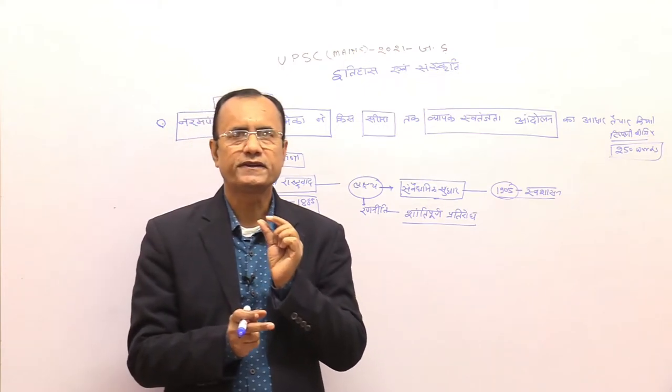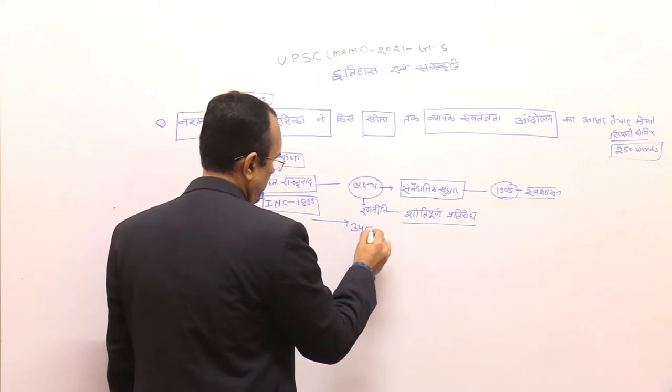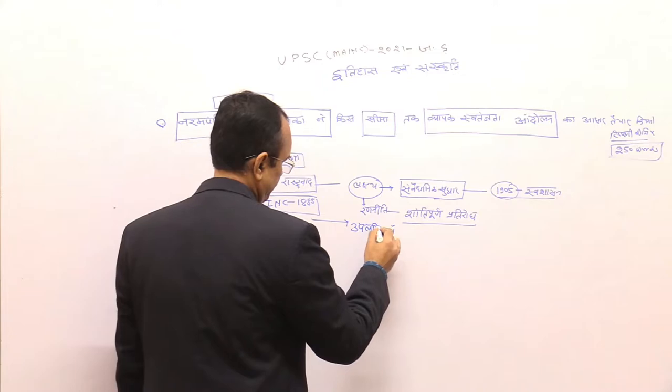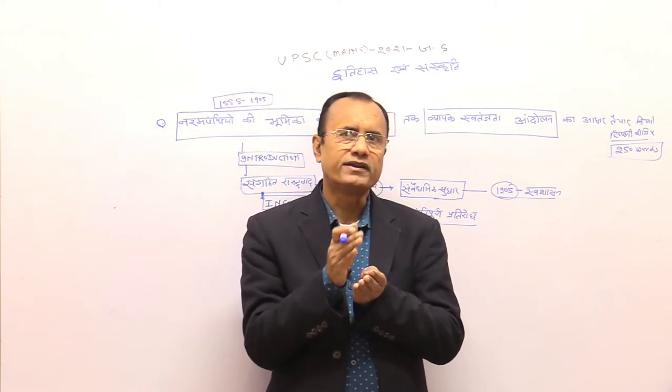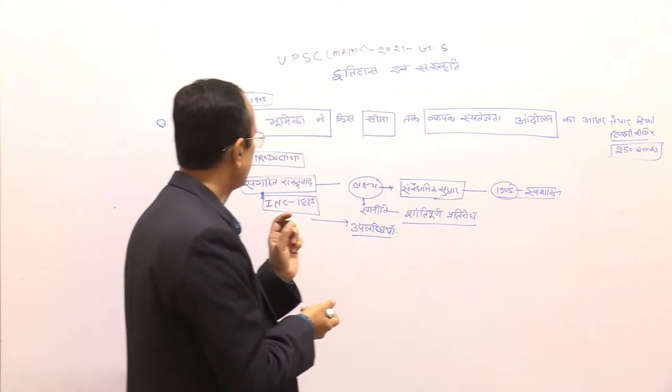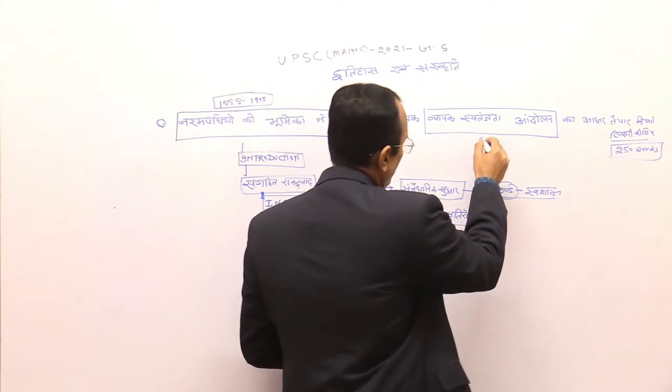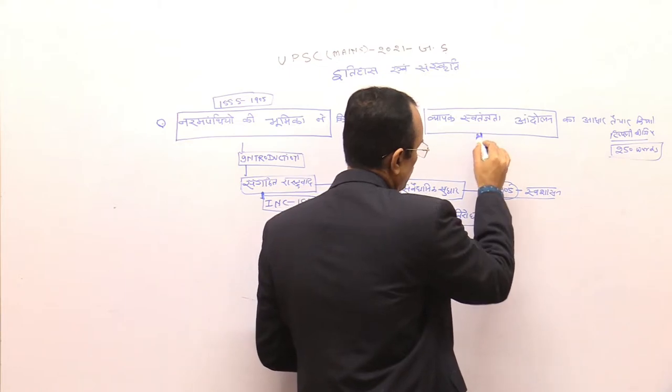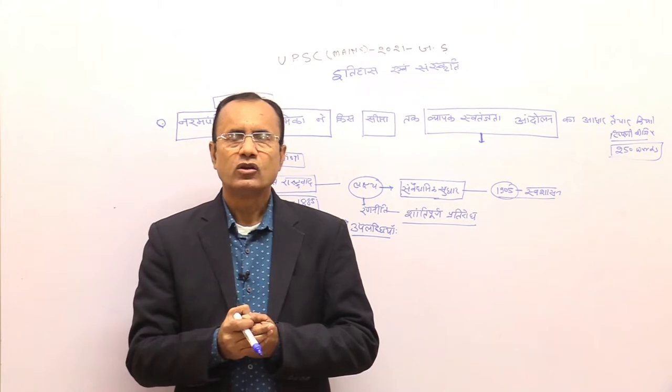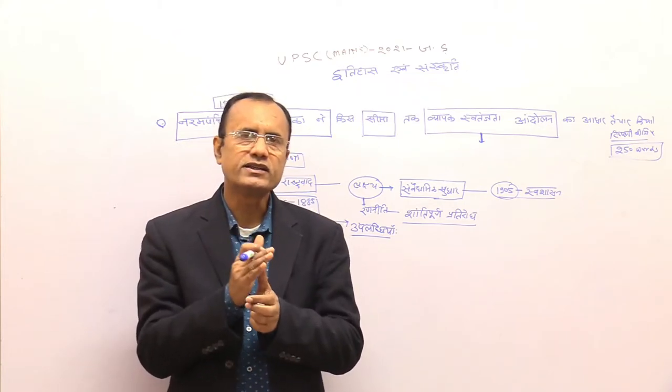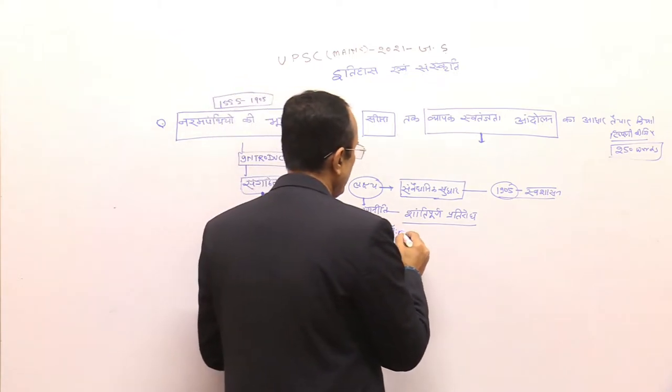तीसरा जो important चीज है इनकी भूमिका के संदर्भ में तीसरी जो बात में कह रहा हूं कि इन्हें उपलब्धियां क्या प्राप्त हुई हासिल क्या हुआ इन्हें क्योंकि इन्हें जो हासिल होगा या जिस आधार का निर्माण इन्होंने किया चूँकि हमें इस question का विश्लेषण इस तरह से करना है कि नरमपंथियों की भूमिका ने किस सीमा तक व्यापक स्वतंत्रता आंदोलन का आधार तैयार किया यानि व्यापक स्वतंत्रता आंदोलन जो Gandhi के नेतृत्व में शुरू होता है और उस में अनेक आयाम है जिस में क्रांतिकारी है मार्क्सवादी है तो उस व्यापक स्वतंत्रता आंदोलन का आधार यह कैसे तैयार करता है।